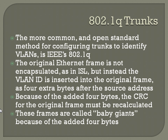The switch performs that CRC recalculation. The port on the near side of the trunk adds the header, recalculates the CRC, and sends it to the other side, where it will be stripped so the frame goes to the corresponding ports. Just like with ISL, you have a chance of frames being too large, so you have to have the MTU set correctly. Frames for 802.1Q may be referred to as 'baby giants' in this context.